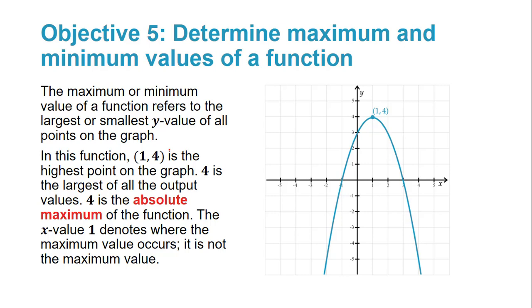The last objective is to determine maximum and minimum values of a function. The maximum or minimum value refers to the largest or smallest y value of all the points on the graph — the largest or smallest output. I have a parabola that opens down, going through x-intercepts at negative 1, 0 and 3, 0; y-intercept at 0, 3; and a vertex at 1, 4. That vertex is the peak of the graph, so 4 is the largest of all output values. We call 4 the absolute maximum of the function.